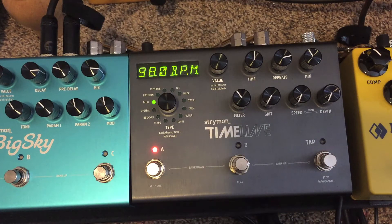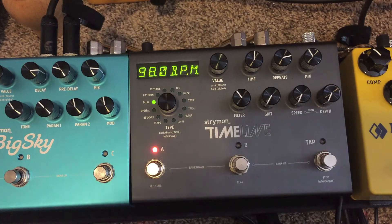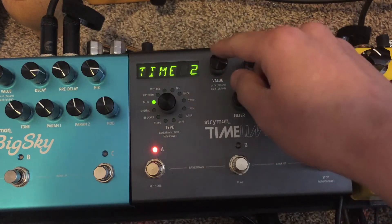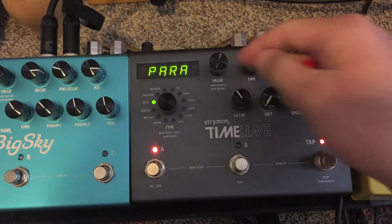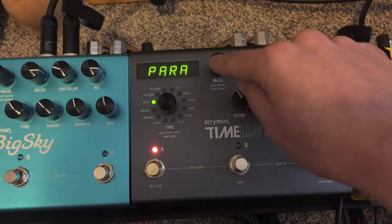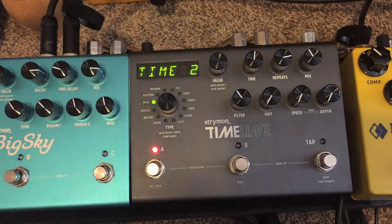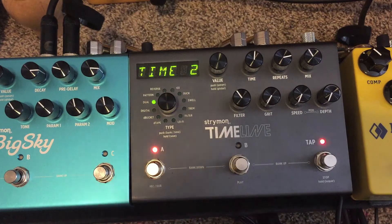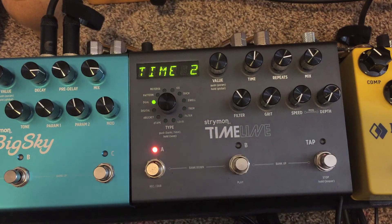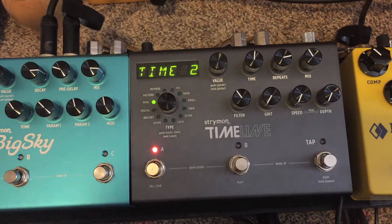So there seems to be a lot of confusion on how this mode works in the Timeline using the parallel mode in stereo. Basically in stereo mode it gives you individual left and right outputs and those are different tempos based on two parameters.